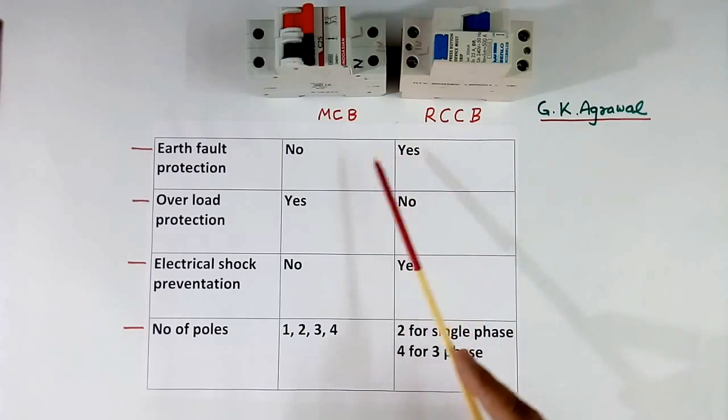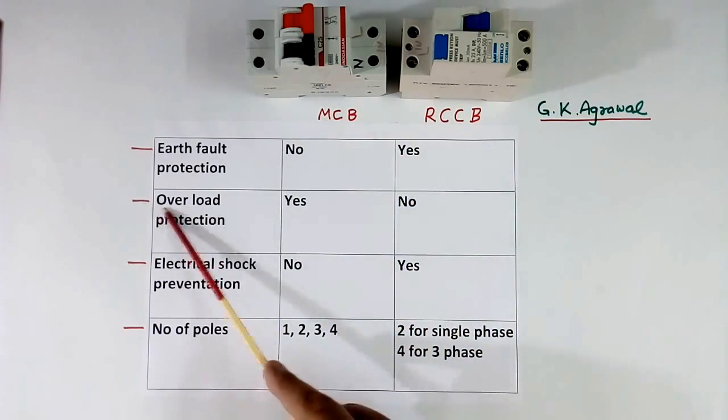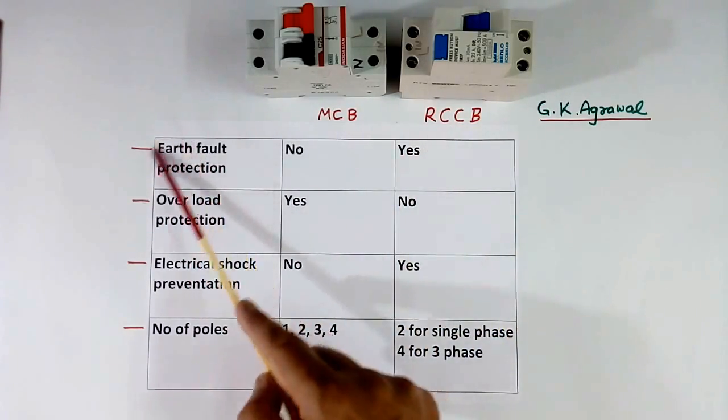This is the major difference. MCB has overload protection and RCCB has earth fault protection.